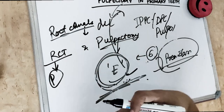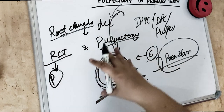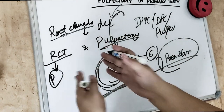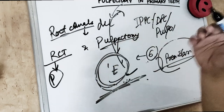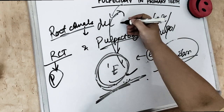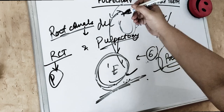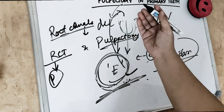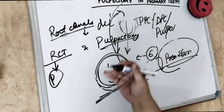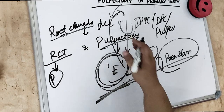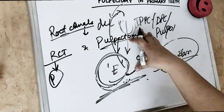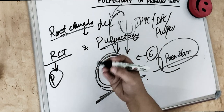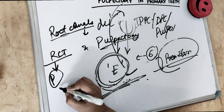The steps are: rubber dam is placed first, the roof of the pulp chamber is removed, then we gain access to the root canal. Once access is obtained, the contents of the pulp chamber are removed from the occlusal one-third to the apical level — because we don't want to push the infection into periapical areas. We remove slowly from the occlusal one-third to avoid forcing infection through the apical foramen.